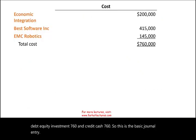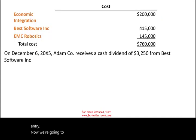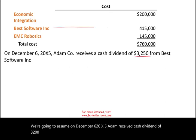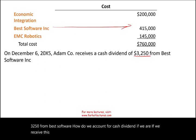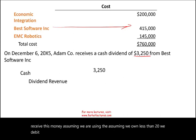Now we're going to assume that on December 6th, 20X5, Adam received a cash dividend of $3,250 from Best Software. How do we account for a cash dividend received? Assuming we own less than 20 percent, we debit Cash $3,250 and credit Dividend Revenue $3,250.